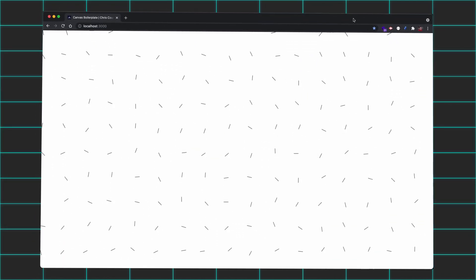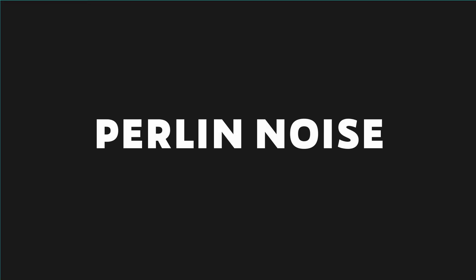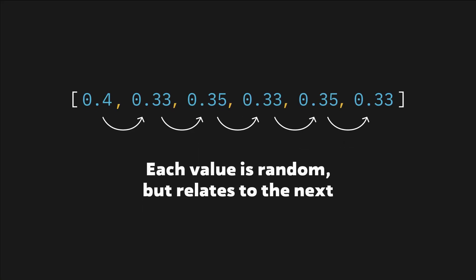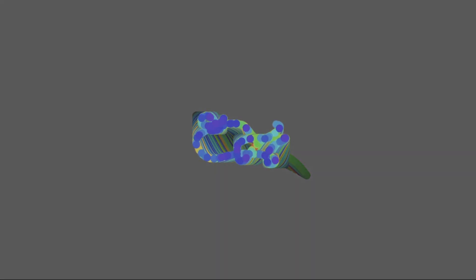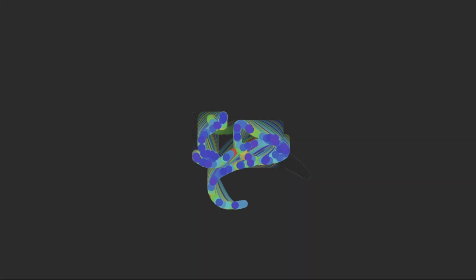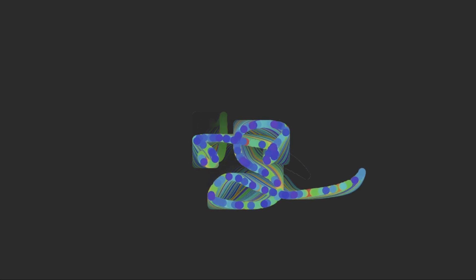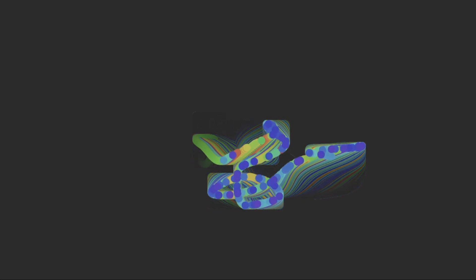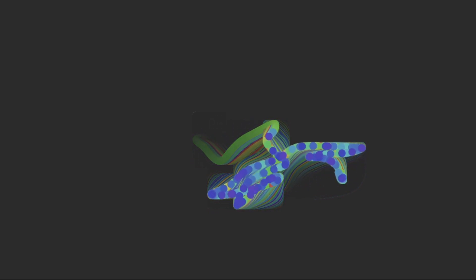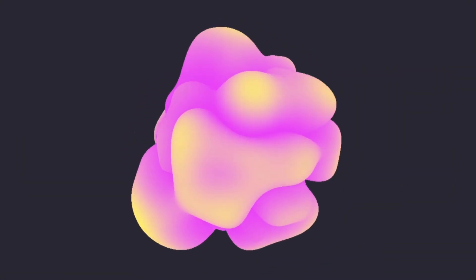Instead, they are generated using what's known as Perlin Noise. Perlin Noise is the concept of generating randomized values that are semi-dependent on neighboring values. By producing semi-dependent randomization, our pieces begin to take life since points, vectors, and positions have a sort of flow to them, while still maintaining some sort of unknown randomness.